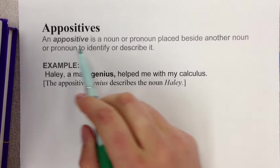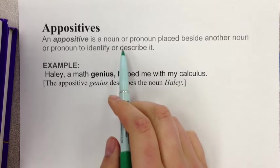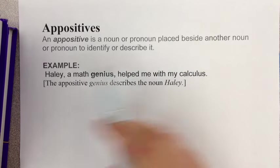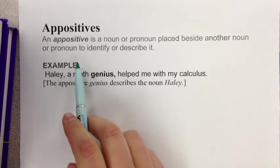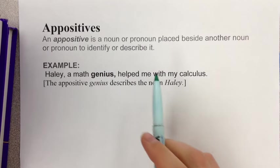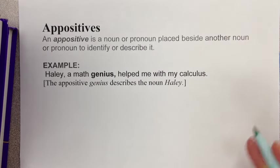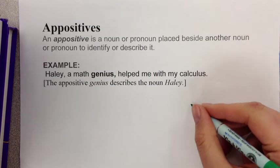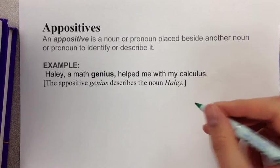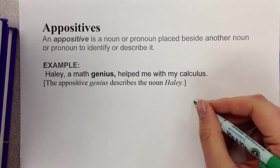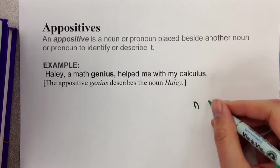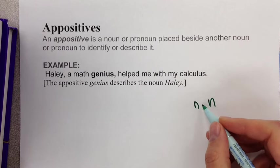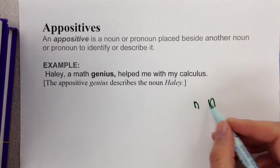An appositive is a noun or pronoun placed beside another noun or pronoun to identify or describe it. So what you're looking for is a noun next to another noun — nouns touching.